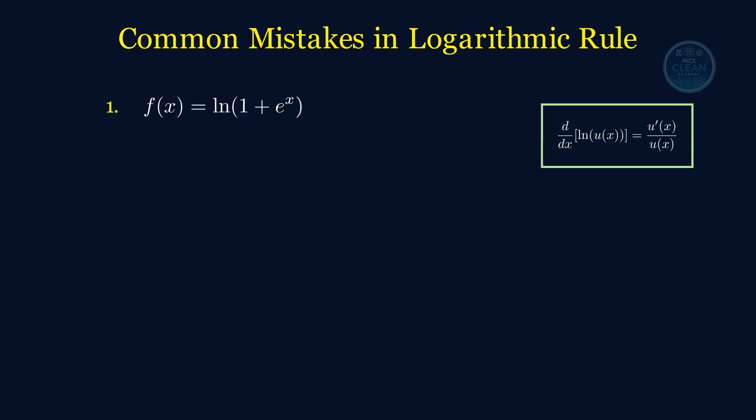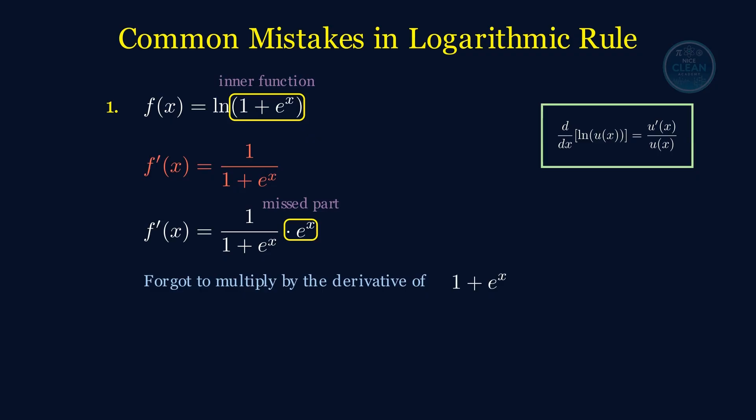Let's start with f of x equals the natural log of 1 plus e to the x. A lot of students just write the derivative as 1 over 1 plus e to the x. Looks fine, but it's actually missing something. We forgot to multiply by the derivative of what's inside the log, and that's e to the x. So the correct derivative is 1 over 1 plus e to the x times e to the x. That's the chain rule at work.